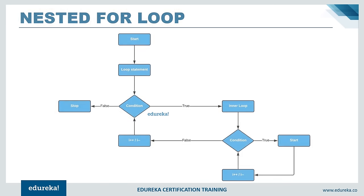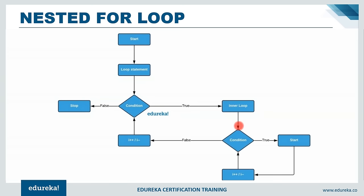Next is the nested for loop, also called an advanced for loop. It includes a for loop inside an outer for loop. In the flowchart: after the beginning statements, the outer for loop condition is checked — if true, the inner for loop is entered and executes until its own condition becomes false.